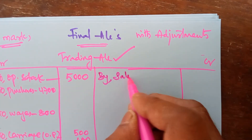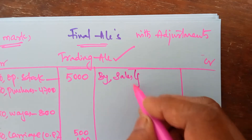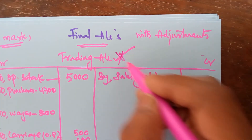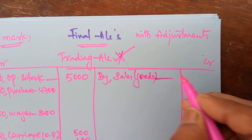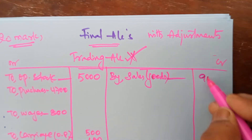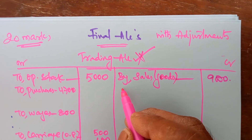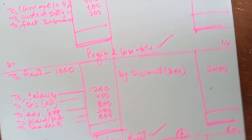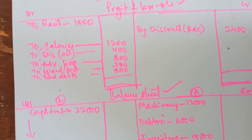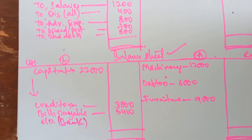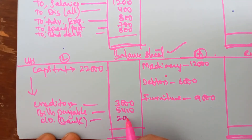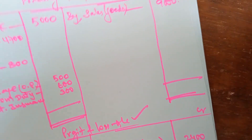The next item in the trial balance is sales. Sales means selling goods. Wherever you come across goods, they should be taken in the trading account. There are no returns, so show the amount straight away to the outer column — 9,000. Then the next item is overdraft. Overdraft is a liability to the bank — show it on the liability side in the balance sheet. Overdraft amount is 2,000. Now all items from the trial balance have been taken.